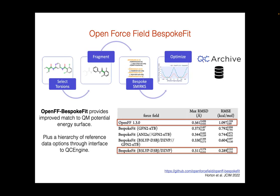Additionally, through the interface to QCEngine software, we have access to a whole range of reference data generation options. Not only can we change the level of QM theory, we can use completely different reference data. For example, we can use XTB semi-empirical methods to perform the scan and then QM single points on that potential energy surface, or XTB scans with QM single points, or just pure XTB scans. This gives a ladder of accuracy — and also a ladder of computational expense, so if you don't need as much accuracy you could use XTB to speed things up.